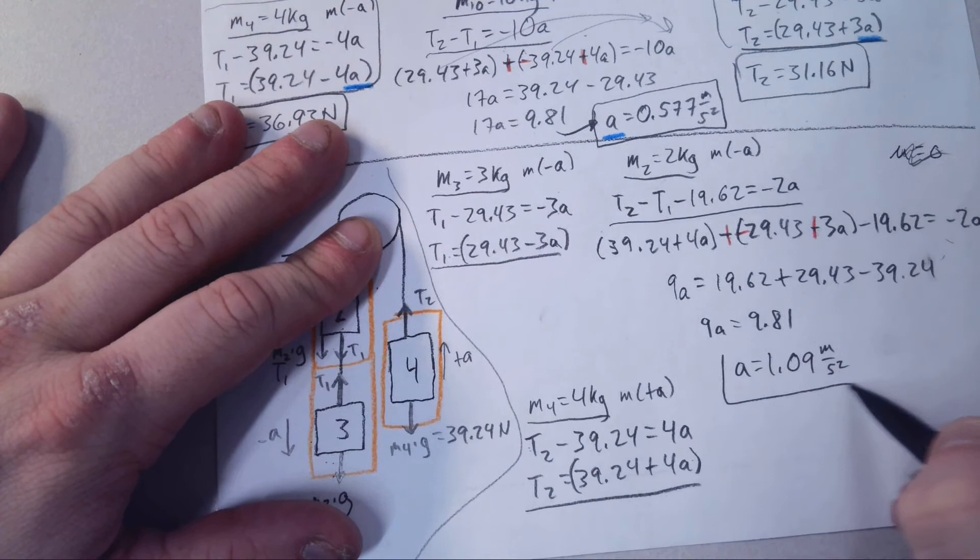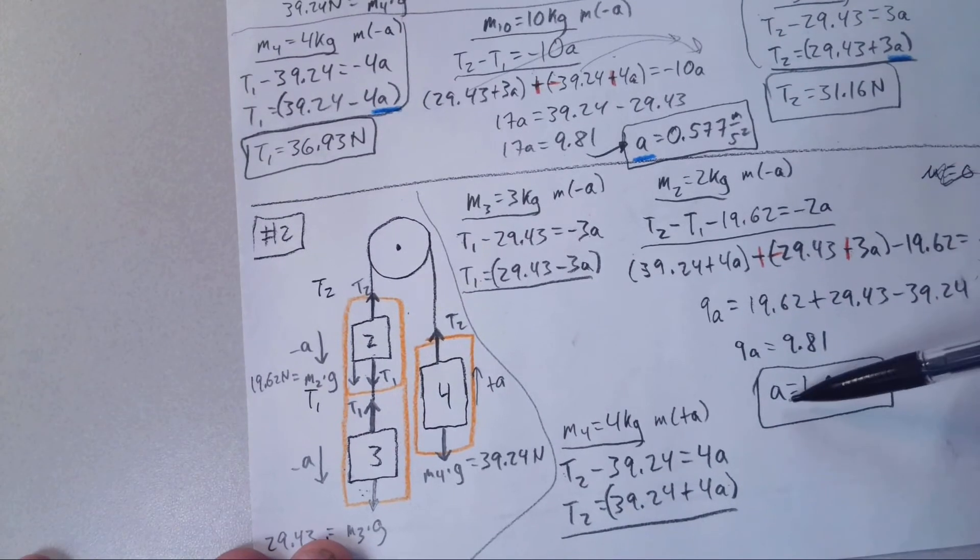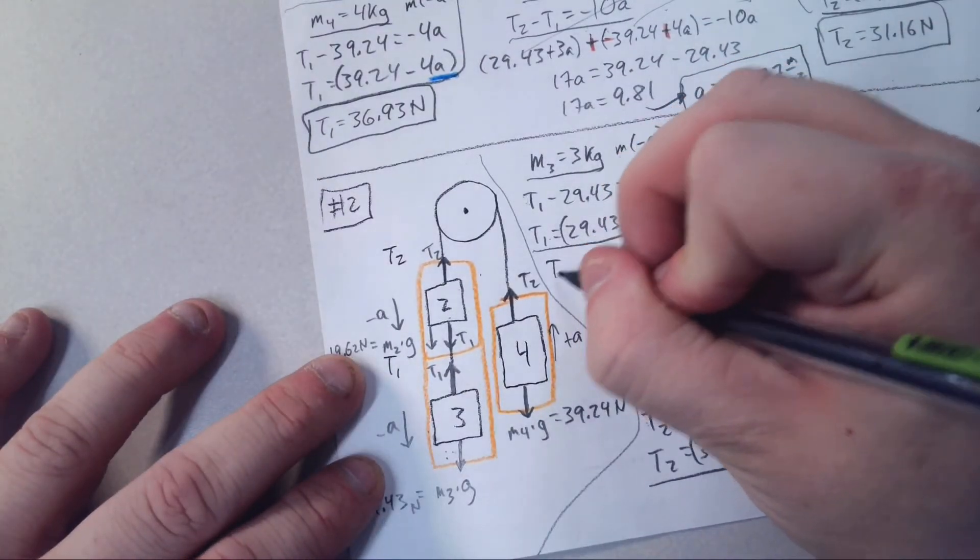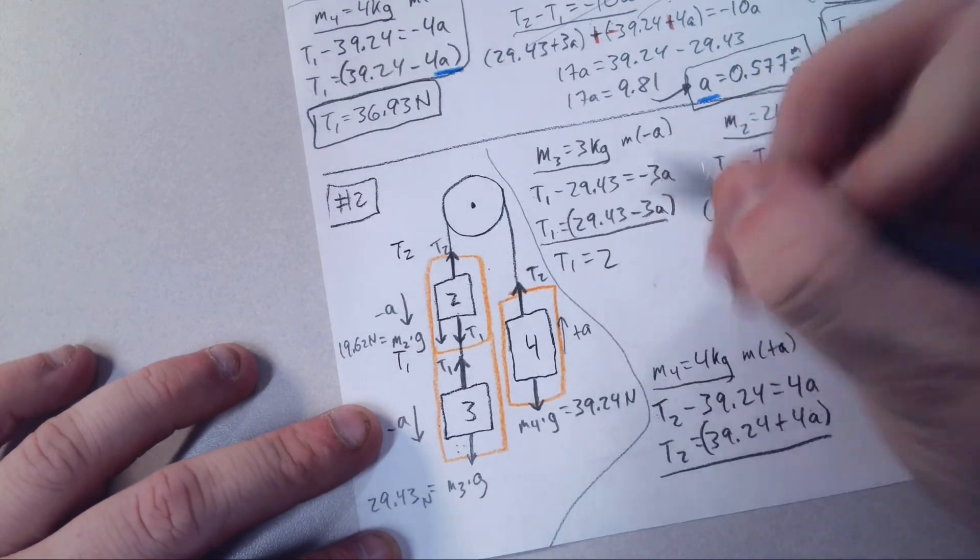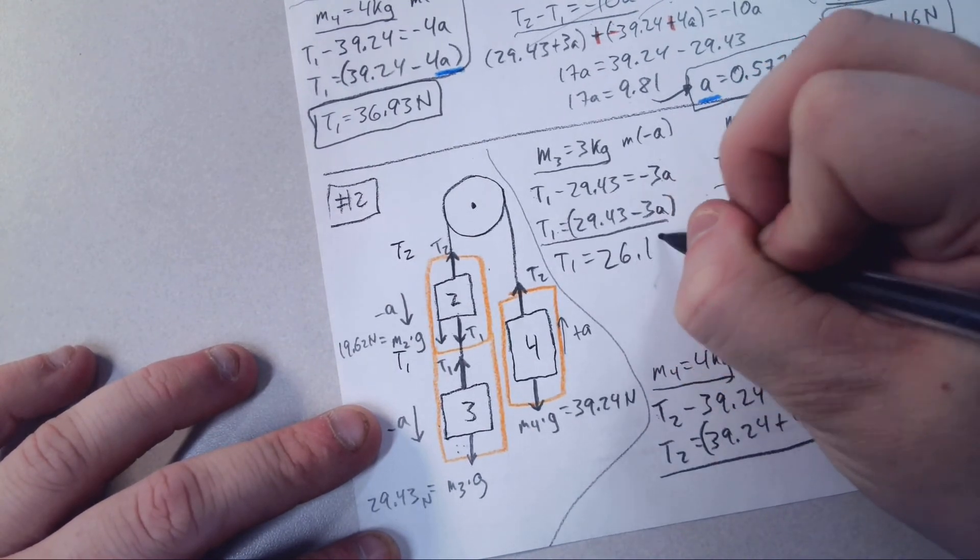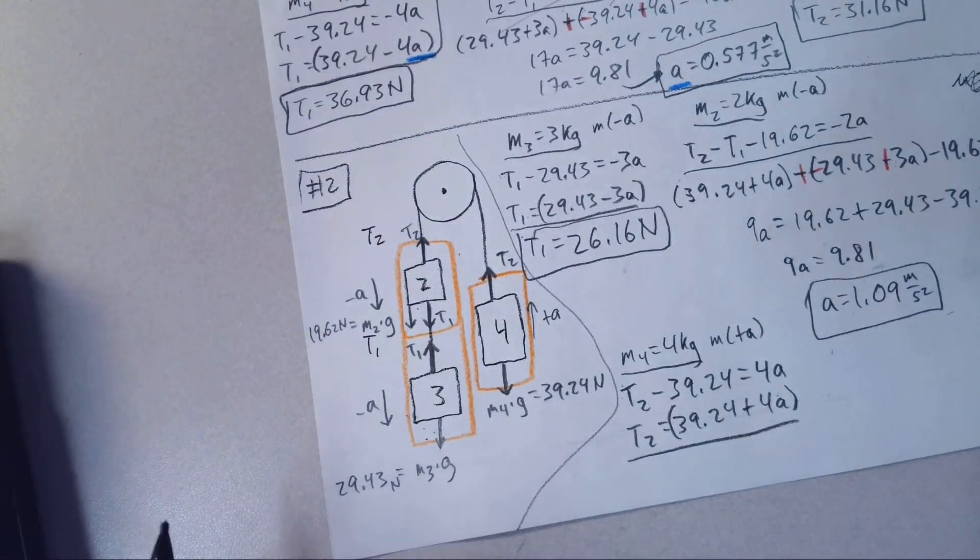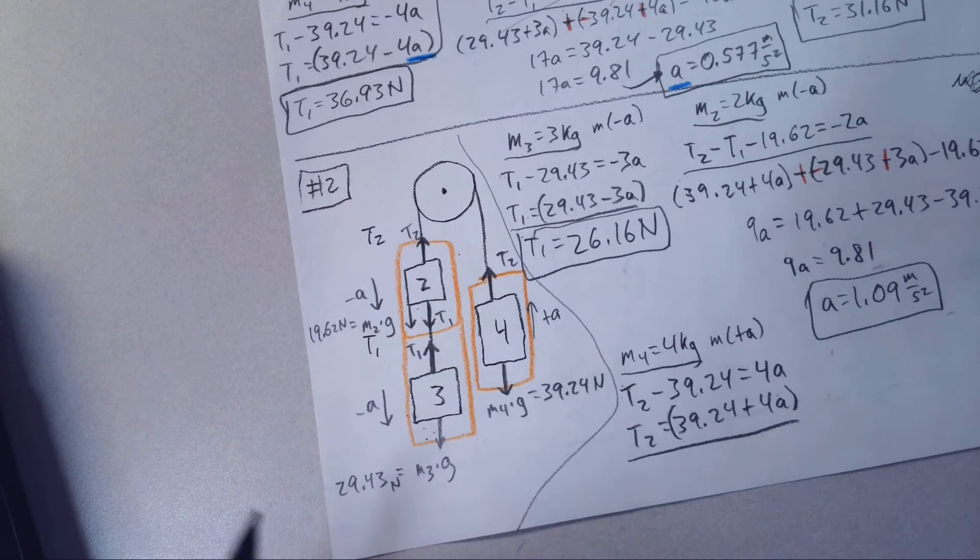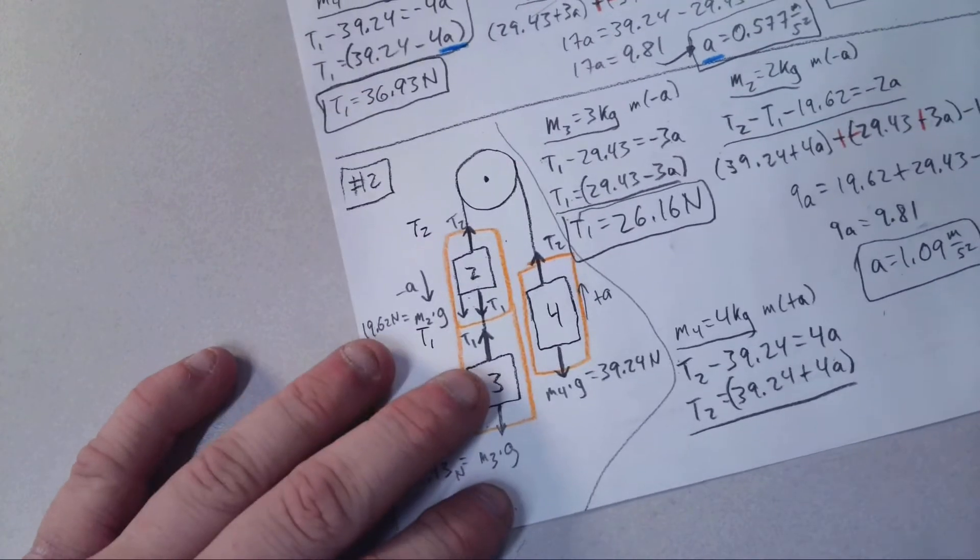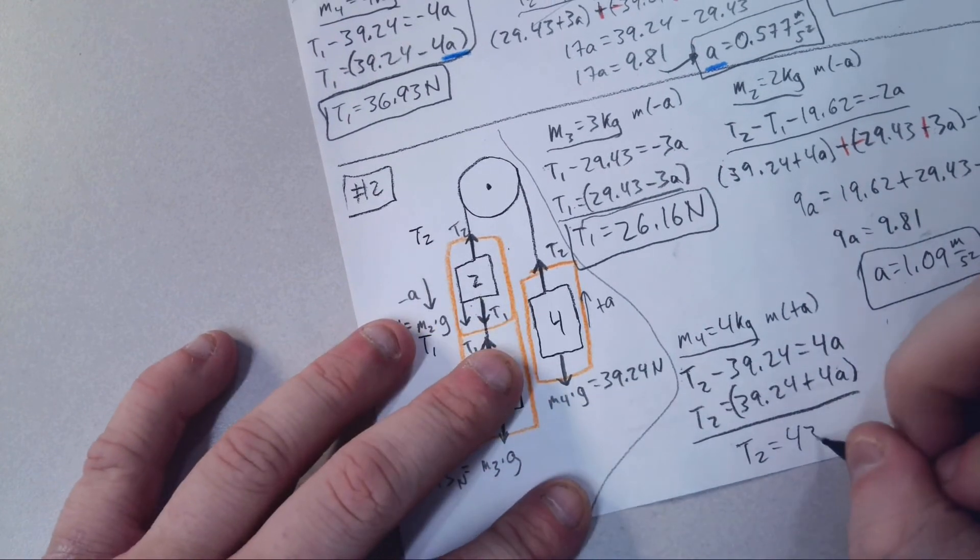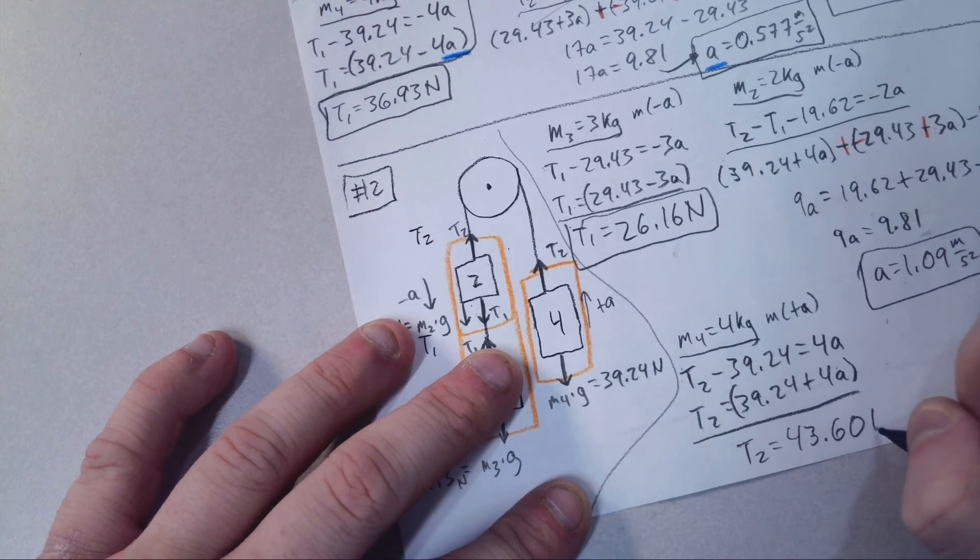So 9.81 divided by 9 is 1.09 meters per second squared. I'm going to go ahead and solve for the tensions now. So this A goes there, and that A goes there. If we solve for T1, it should get 26.16 newtons. And then for this one down here, T2 is 43.6.